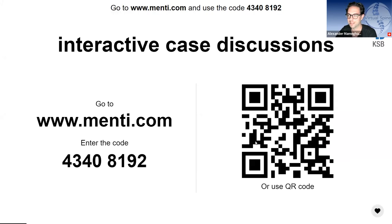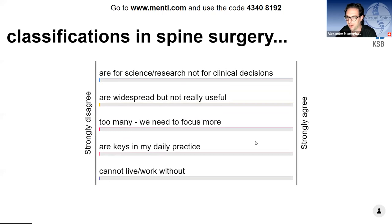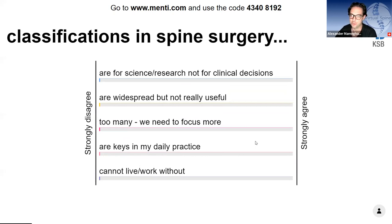For all the folks who joined a little bit later: this is an interactive case discussion today. You can all vote — just scan the QR code or go to menti.com and enter the eight-digit code, written on the top of the presentation throughout the whole session. My question to you: do we really need classifications, or are they just for academic spine surgery? Is this for science and research, or do we always use them because they're widespread even though we don't really need them — like the Modic classification?